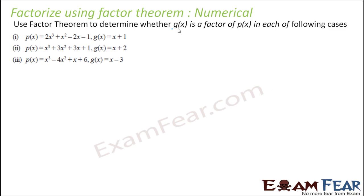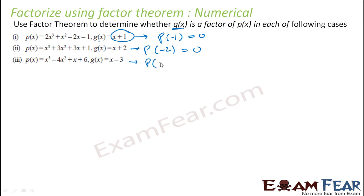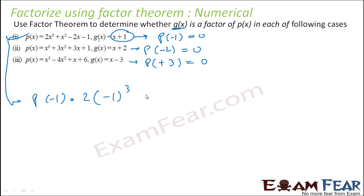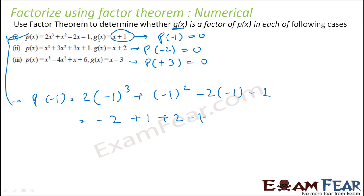Similar question: using factor theorem, determine whether g(x) is a factor of p(x). For example, if g(x) is (x plus 1), prove p(minus 1) equals 0. If g(x) is (x plus 2), prove p(minus 2) equals 0. If g(x) is (x minus 3), prove p(plus 3) equals 0. For the first one: p(minus 1) equals 2(minus 1) cube plus (minus 1) square minus 2(minus 1) minus 1, which is minus 2 plus 1 plus 2 minus 1 equals 0. So yes, (x plus 1) is a factor.